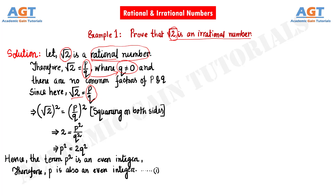Now squaring on both sides of this equation, we have root 2 whole square equals P divided by Q whole square. Solving both sides, we have P square equals twice Q square. So we can see that P square has a value which is a multiple of 2. Being a multiple of 2, P square is an even integer, and since P square is an even integer, P should also be an even integer. This is our first result: P is an even integer.